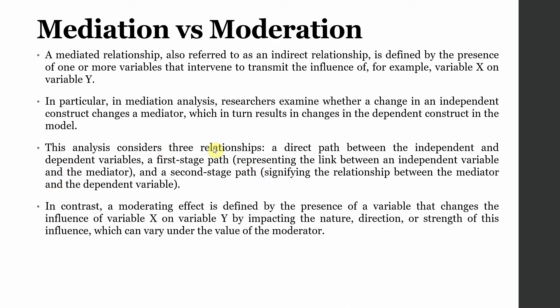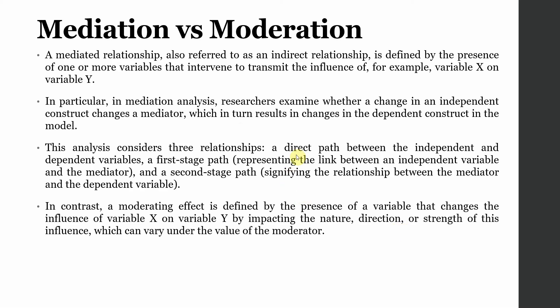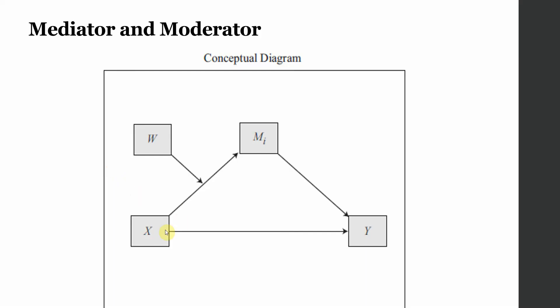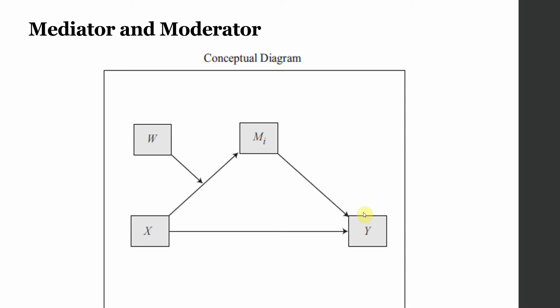The analysis considers three relationships: a direct path between the independent and dependent variable — here it is between X and Y; a first stage path representing the link between the independent variable and the mediator — here it is X and M; and finally, the second stage signifying the relationship between the mediator and the dependent variable — here it is M and Y.